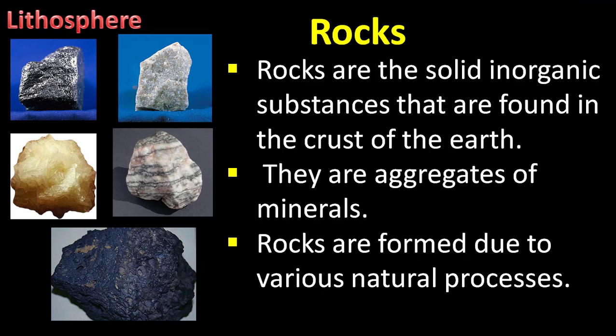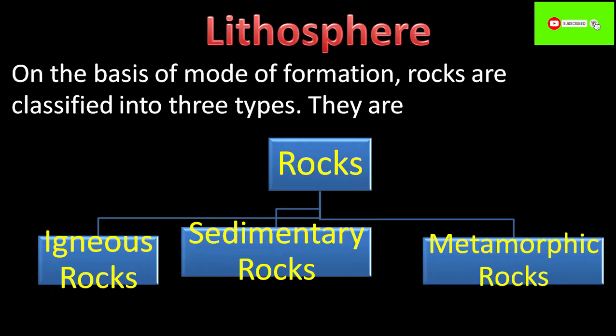Rocks are the solid inorganic substances that are found in the crust of the earth — the first surface of the layers of the earth. They are aggregates of minerals and are naturally formed due to various natural processes. On the basis of mode of formation, rocks are mainly classified into three types: igneous rocks, sedimentary rocks, and metamorphic rocks.